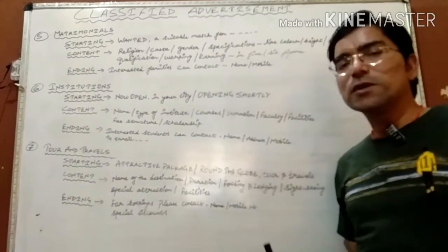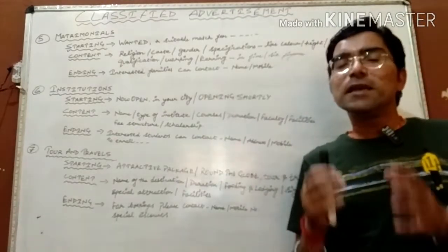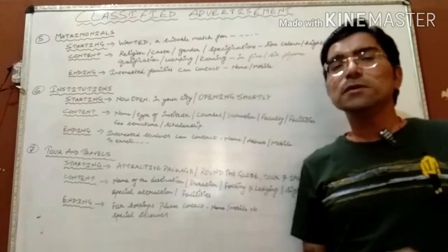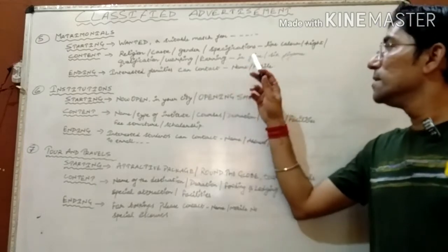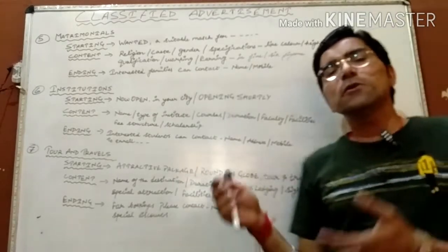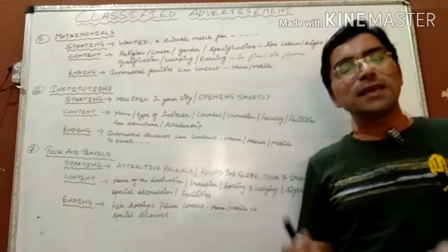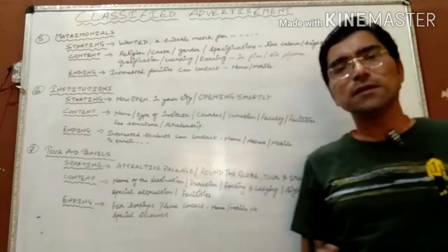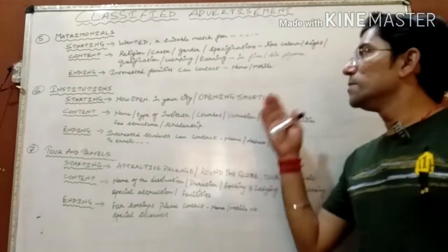How to disclose the earning of a boy or girl for whom you are looking for a suitable match: we never disclose earning in figures like 10,000 or 50,000 or 1 lakh. Instead, we use the phrase 'earning in five figures' or 'earning in six figures.' Earning in five figures means up to 99,000, and earning in six figures means 1 lakh or more.